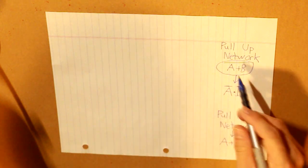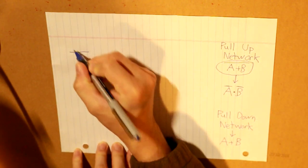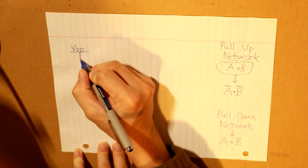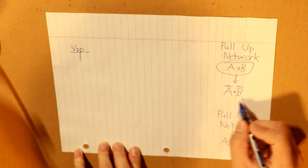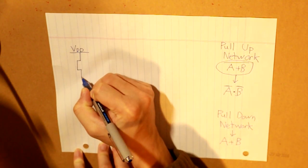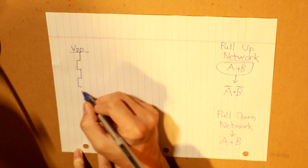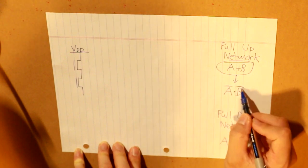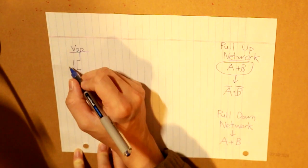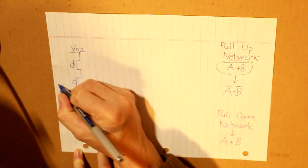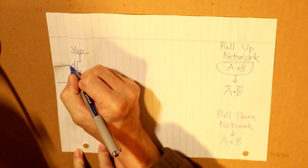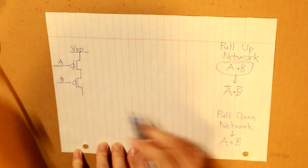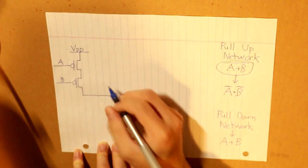So first let's draw our pull-up network, here we have our high VDD, right here it's an AND, so let's draw the formation of that. And what we also know is that both of them have a separate inverse, so we draw this circle here. Let's write down our inputs, A and B, so we got that now, and our output's right here.